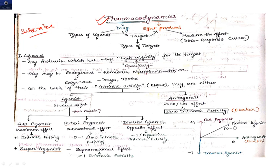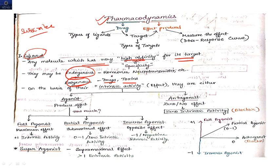The first thing we are going to discuss in pharmacodynamics is ligands — whether agonist or antagonist. A ligand is any molecule which has very high affinity for its target. Ligands may be of endogenous origin or exogenous origin such as drugs or toxins coming from outside the body, or hormones and neurotransmitters produced inside the body.